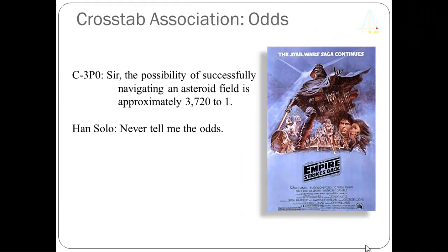You may have seen the Star Wars movies. C-3PO says 'Sir, the possibility of successfully navigating an asteroid field is approximately 3,720 to one.' That is not a possibility — it's an odds. If it were a probability it would be expressed differently. C-3PO made an error, reporting what is actually an odds as though it were a probability. Anyway, we're going to look at odds as another way of understanding cross tabulation tables.